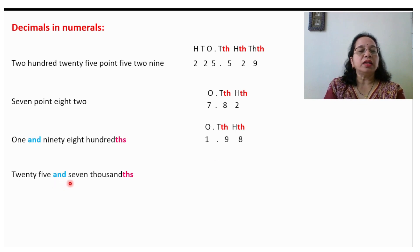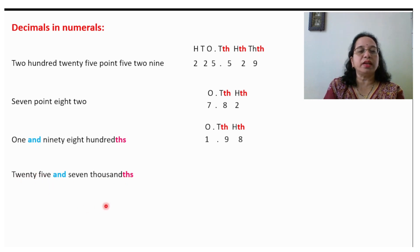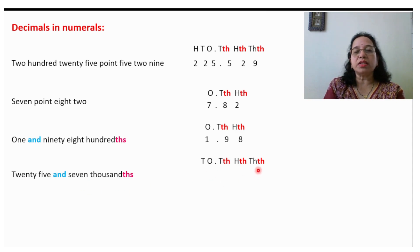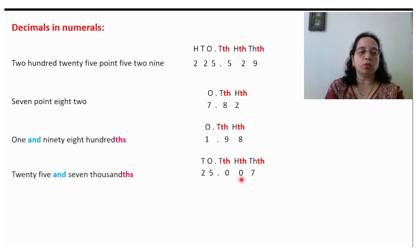25 and 7 thousandths: we will write down places up to thousandths. 25 will come in the whole part, then the decimal point, and 7 thousandths means 7 will come in the thousandths place so other places will be 0. So the decimal is 25.007.